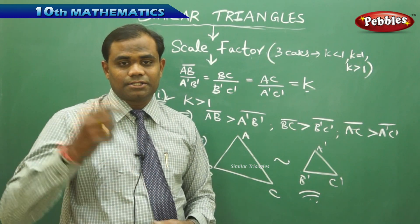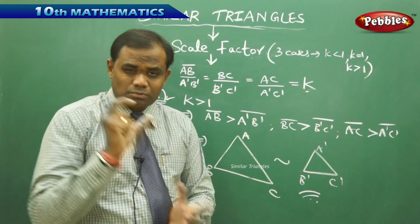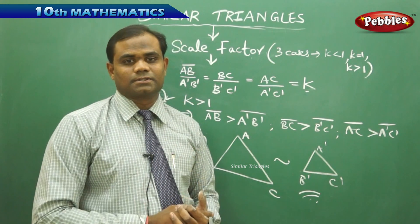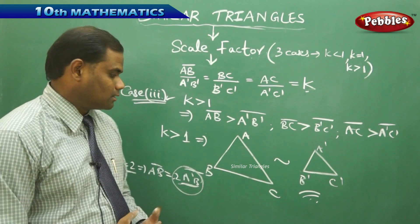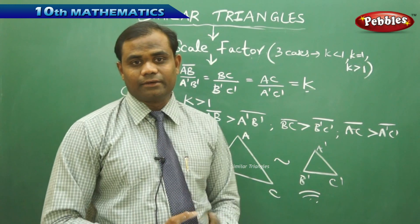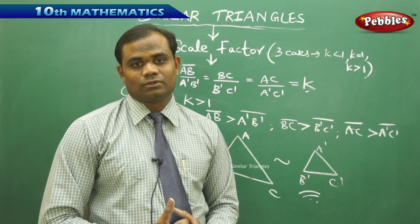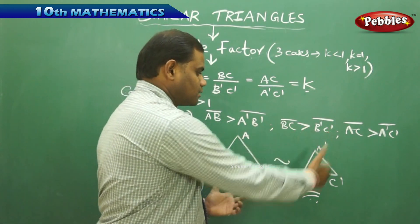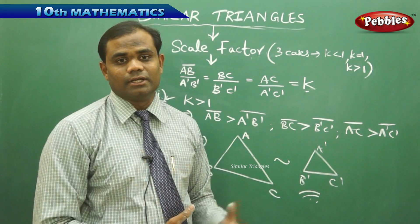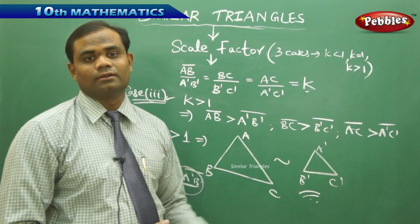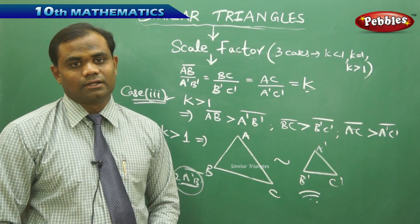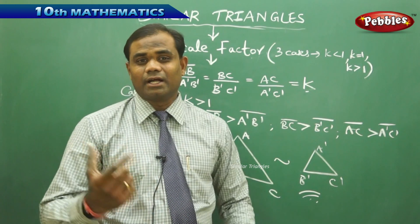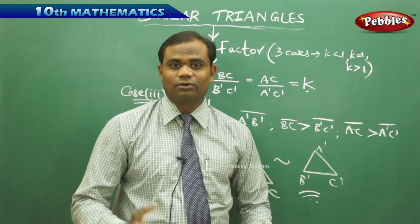The higher the value of k, the smaller the triangle — the more it diminishes. This is what we understand from proportionately increasing the value of k. Conversely, the lesser the value of k, the more enlarged is the image of the similar triangle. This is how we understand the relationship between the value of k and enlargement.